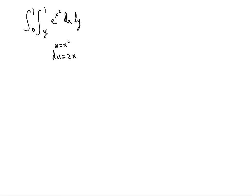As a result, we have to switch the order of integration — making the first integral deal with respect to x and the inner integral with respect to y. Before we do that, let's draw a picture: an xy-plane. Notice that in the inner integral the limits for x are from y to 1, and y goes from 0 to 1, so let's label those points.